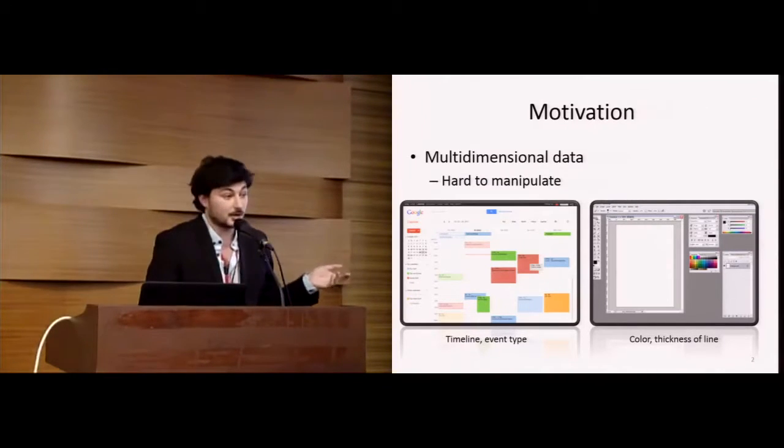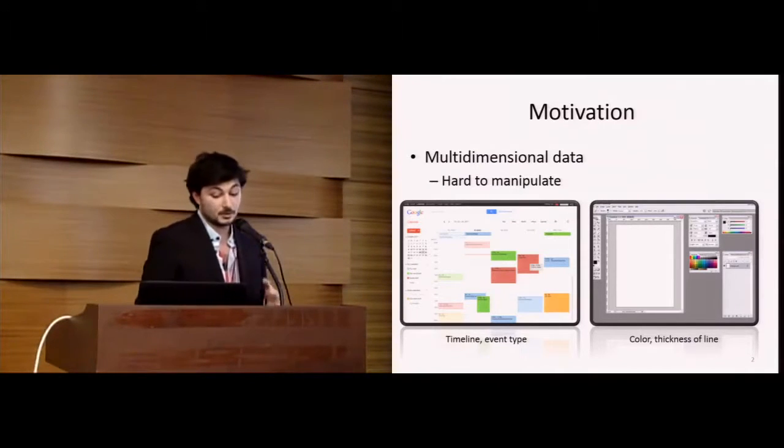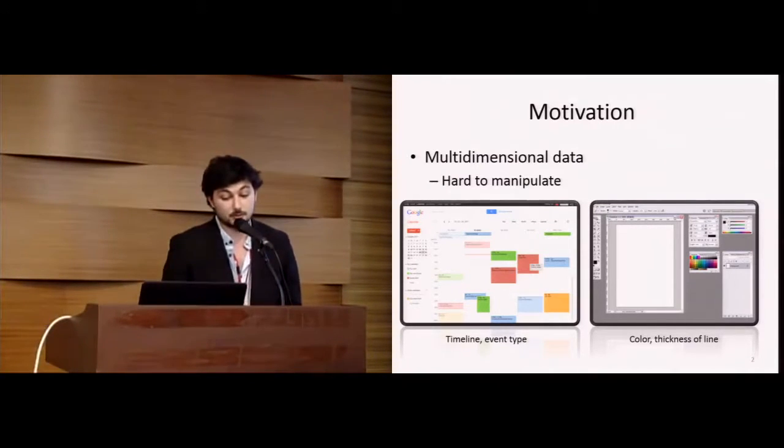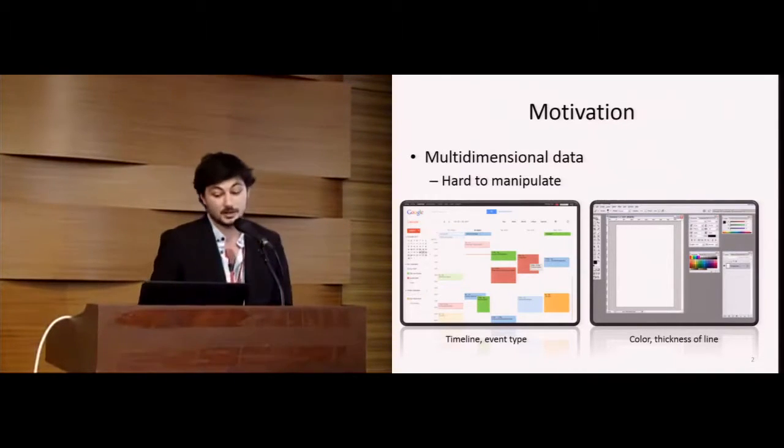For example, on Google Calendar, those dimensions could be the timeline or the event type. However, on Photoshop, for example, those dimensions could be the color or the thickness of a line.